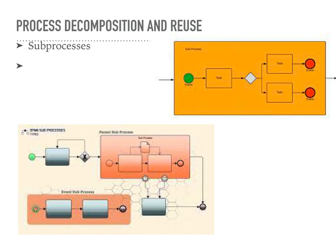A reusable subprocess is defined separately and can be referenced and invoked from multiple points within the main process or even from other processes. It is depicted as a rectangular shape with a thinner border, and its activities are defined in a separate subprocess diagram. There are many benefits to using subprocesses. Process decomposition means subprocesses can break down complex processes into smaller, more manageable units, improving process understanding and making it easier to analyze, maintain, and modify specific parts. Reusability means subprocesses can be defined once and reused in multiple processes or called multiple times within the same process, promoting consistency and reducing redundancy. Modularity means subprocesses allow encapsulation of logic, enabling the reuse of predefined patterns or standardized sequences of activities, improving process consistency and accelerating development.